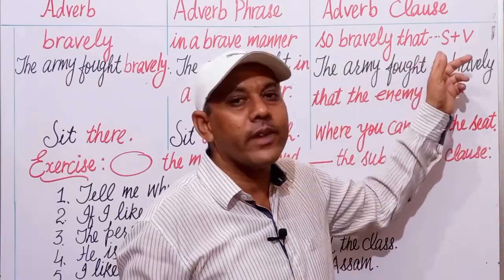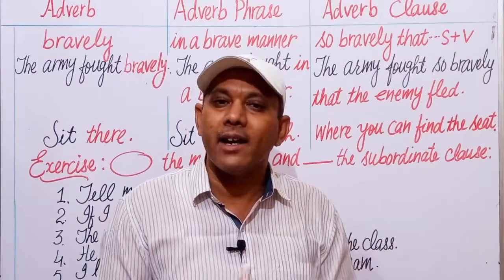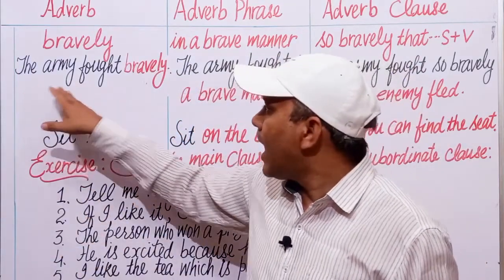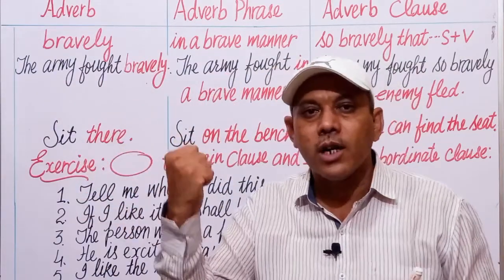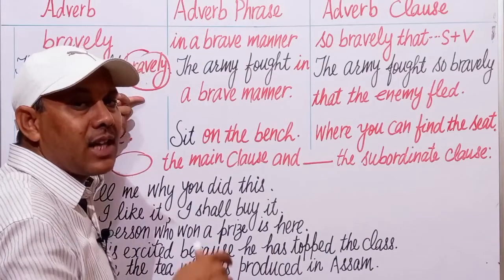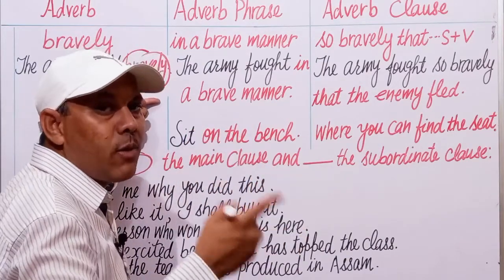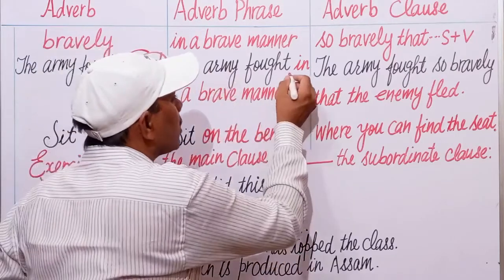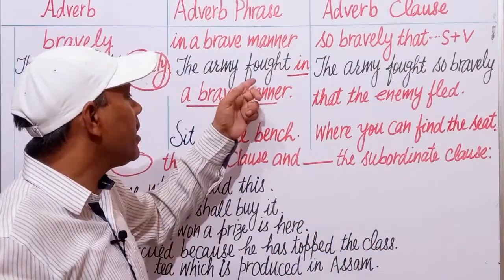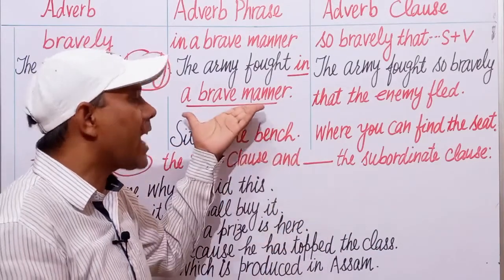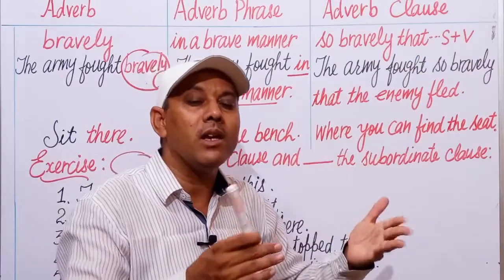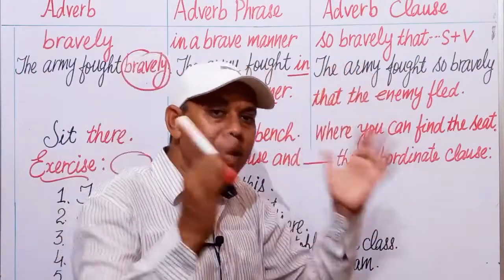Then add 'so bravely that' and an appropriate subject and verb to make it an adverbial clause. For example: 'The army fought bravely' — 'bravely' is an adverb of manner. How did the army fight? The army fought bravely. Next: 'The army fought in a brave manner' — we have changed an adverb into an adverb phrase with no change in meaning. Then: 'The army fought so bravely that the enemy fled' — a subject-verb combination has been added to create an adverb clause.